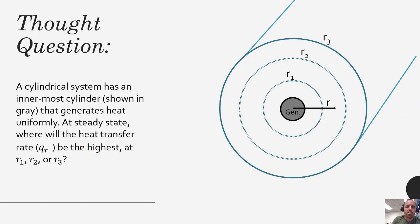Let's ask another thought question — this one's a little different. A cylindrical system has an innermost cylinder shown in gray that generates heat uniformly. At steady state, where will the heat transfer rate q sub r be the highest — at r1, r2, or r3? Now we are no longer asking about flux; we're asking about the total rate of heat transfer. Take a second to pause and think.